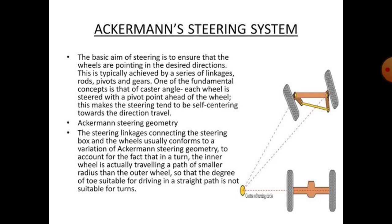The caster angle in the Ackerman steering mechanism is adjusted with the help of a pivoted point, which makes the steering tend to be self-centering toward the direction of travel. The steering linkages connecting the steering box and wheels usually conform to a variation of Ackerman steering geometry, accounting for the fact that the inner wheel travels a path of smaller radius than the outer wheel. Therefore, the degree of toe suitable for driving in a straight path is not suitable for turning.